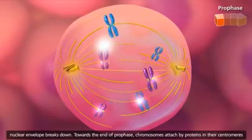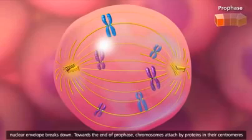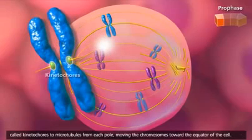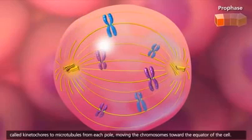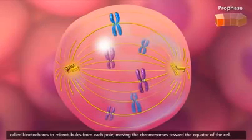Towards the end of prophase, chromosomes attach, by proteins in their centromeres called kinetochores, to microtubules from each pole, moving the chromosomes toward the equator of the cell.